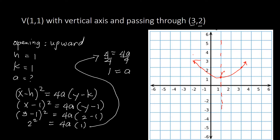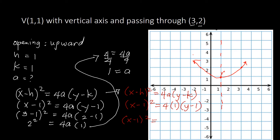Now that we have A = 1, we write the final standard equation of the parabola. Substituting H = 1, K = 1, and A = 1 into (X − H)² = 4A(Y − K), we get (X − 1)² = 4(Y − 1). That is our standard equation of the parabola.